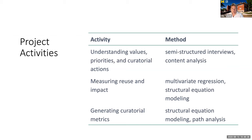The second phase will be measuring reuse and impact. If you think of this as a regression analysis, the values, priorities, and curatorial actions will be on the right side — the stuff we can measure about the study itself. Whether or not it has impact is on the left side. We're using multivariate regression and structural equation modeling to assess those relationships.